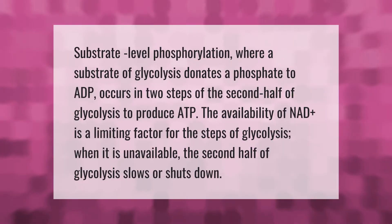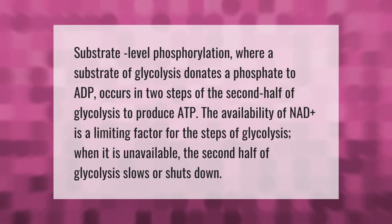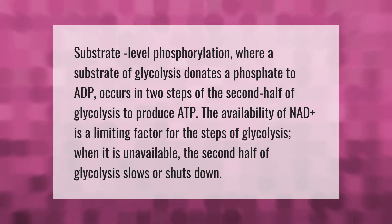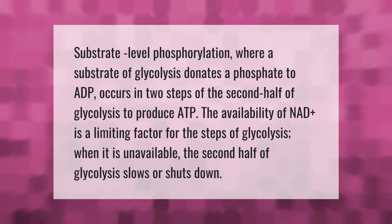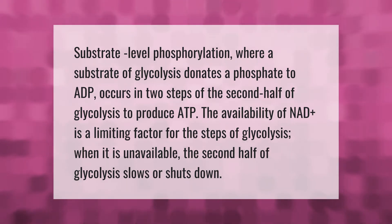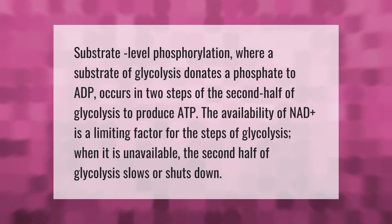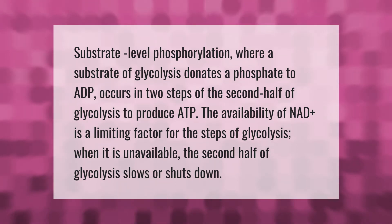Substrate-level phosphorylation, where a substrate of glycolysis donates a phosphate to ADP, occurs in two steps of the second half of glycolysis to produce ATP. The availability of NAD+ is a limiting factor for the steps of glycolysis; when it is unavailable, the second half of glycolysis slows or shuts down.